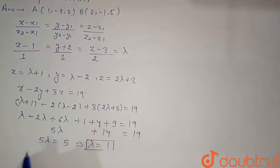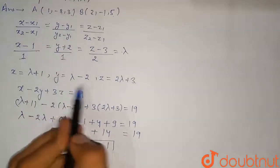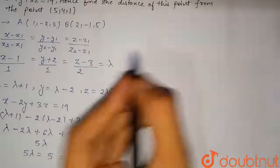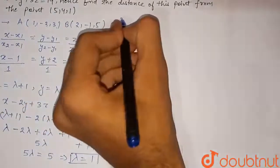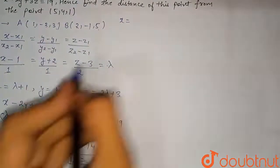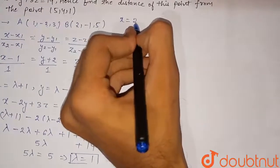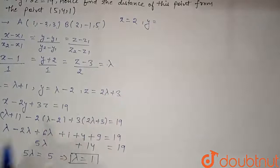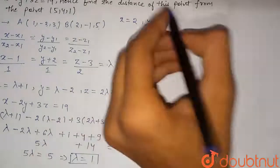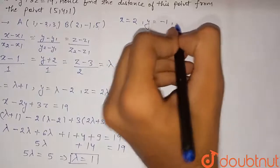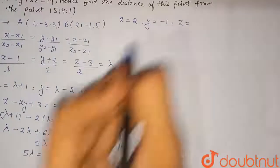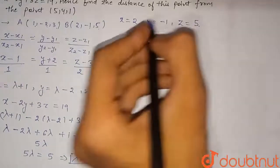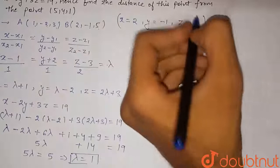With λ = 1, we find the coordinates of the intersection point. x = λ + 1 = 1 + 1 = 2; y = λ - 2 = 1 - 2 = -1; z = 2λ + 3 = 2 + 3 = 5. So the point of intersection of the line and the plane is C = (2, -1, 5).